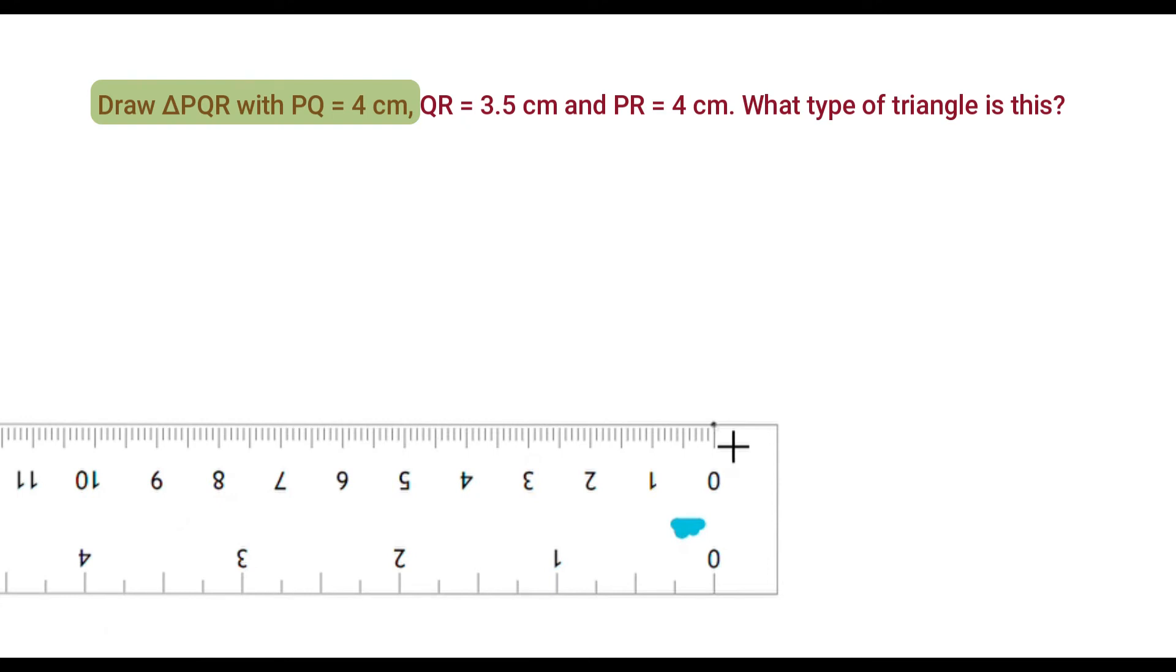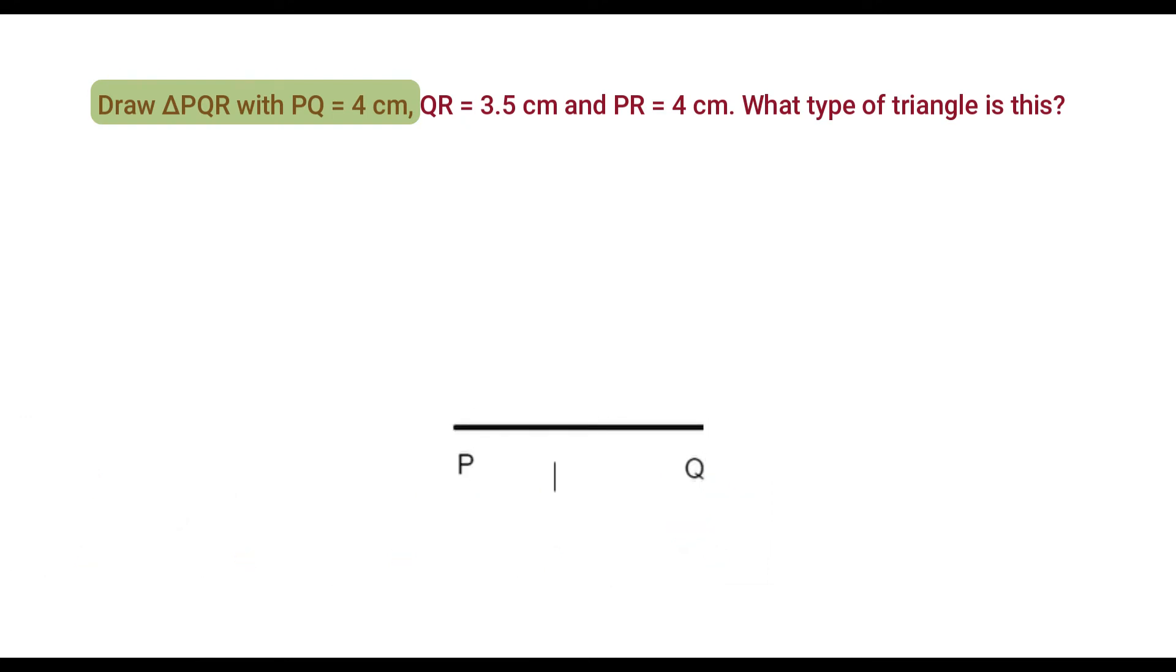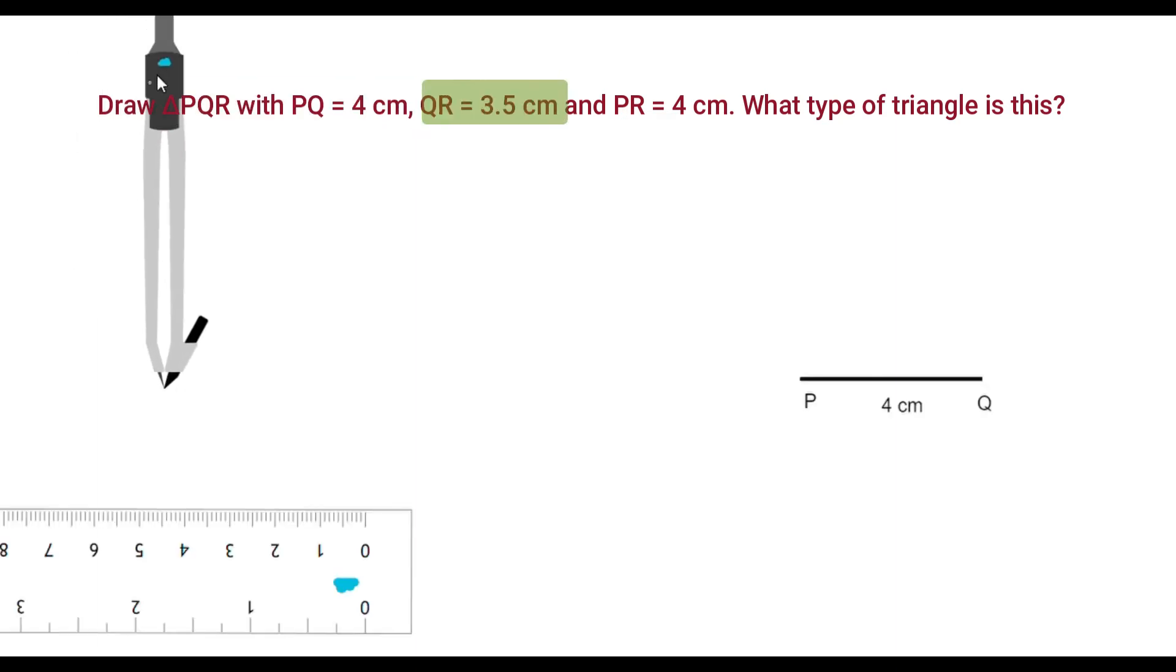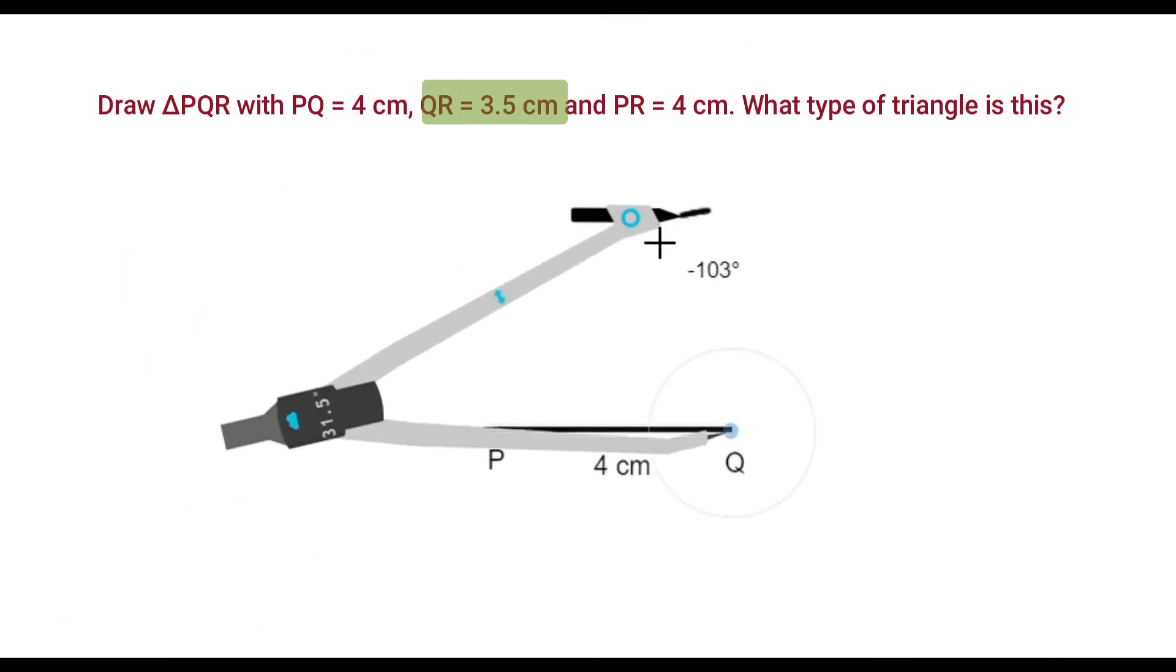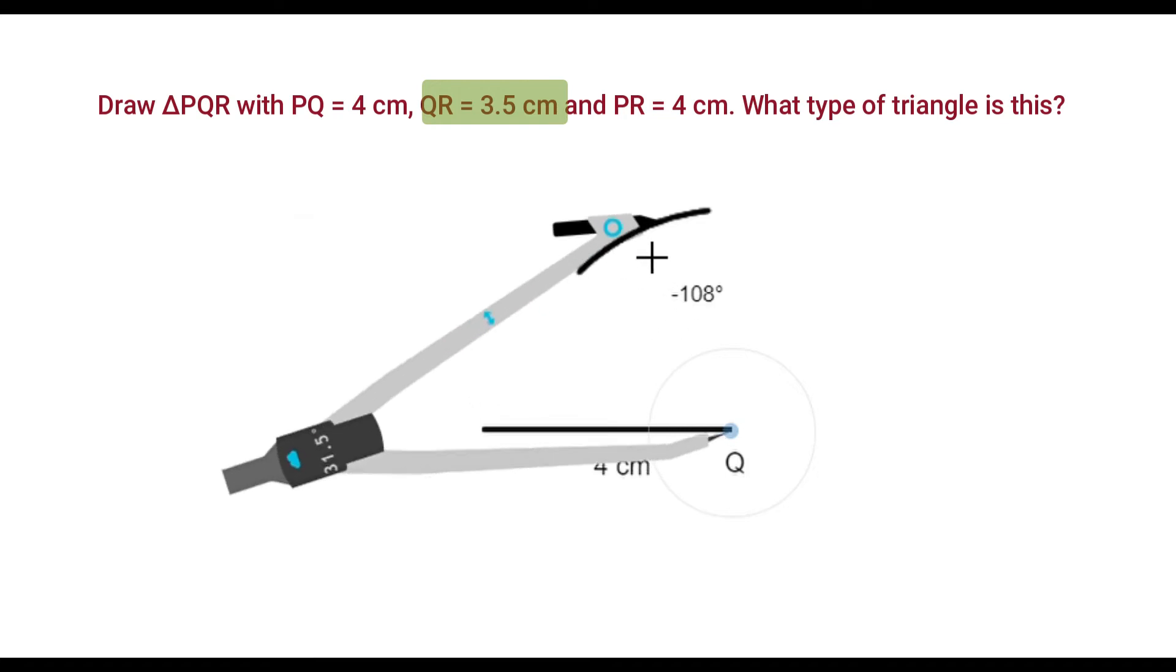First we will draw the line segment PQ. Now, adjust compass up to length of 3.5 cm. Place pointed tip of compass at Q and draw an arc.